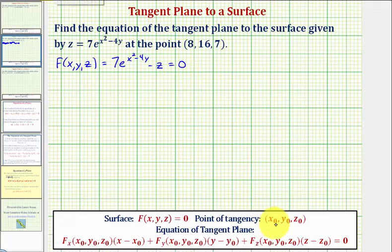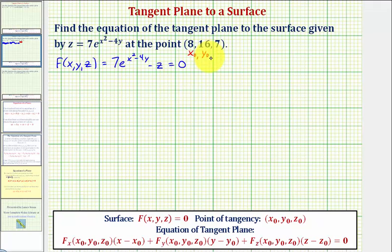Next, notice how the point of tangency is (x₀, y₀, z₀). Here x₀ equals eight, y₀ equals sixteen, and z₀ equals seven.